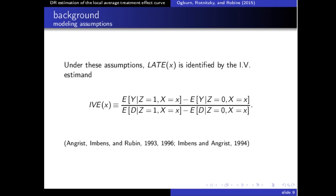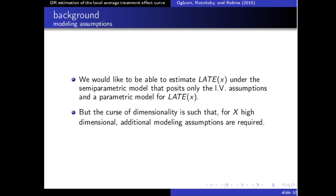Under these assumptions, the local average treatment effect is identified by the instrumental variable estimate. Ideally, we would estimate LATE under a model making no assumptions beyond the identifying assumptions plus a parametric model for the LATE curve. But when X is high-dimensional, we need additional modeling assumptions. The goal is to reduce those additional assumptions and build robustness to misspecification of nuisance models.